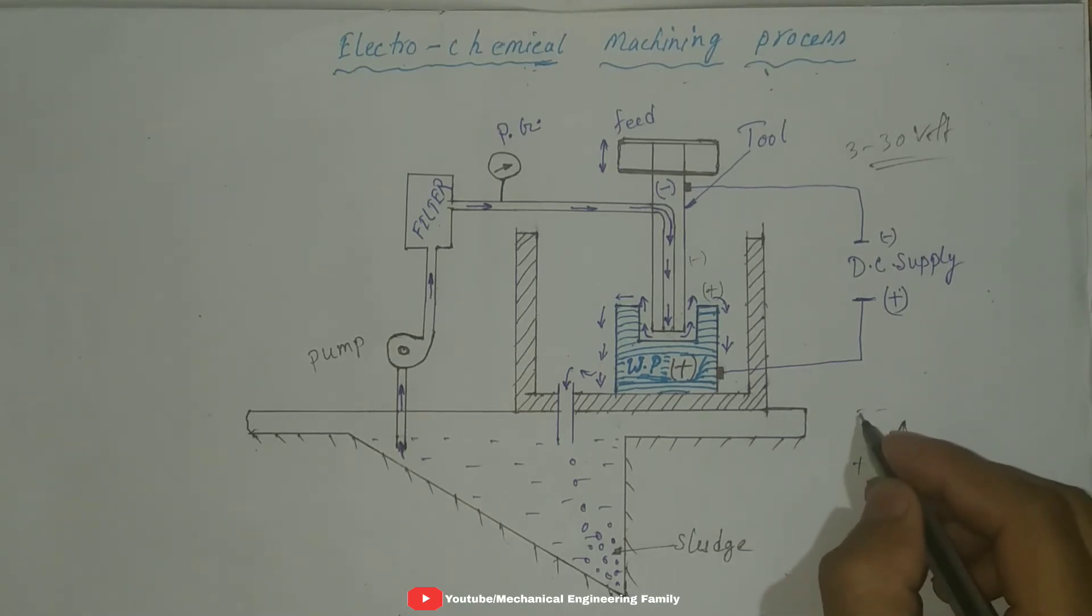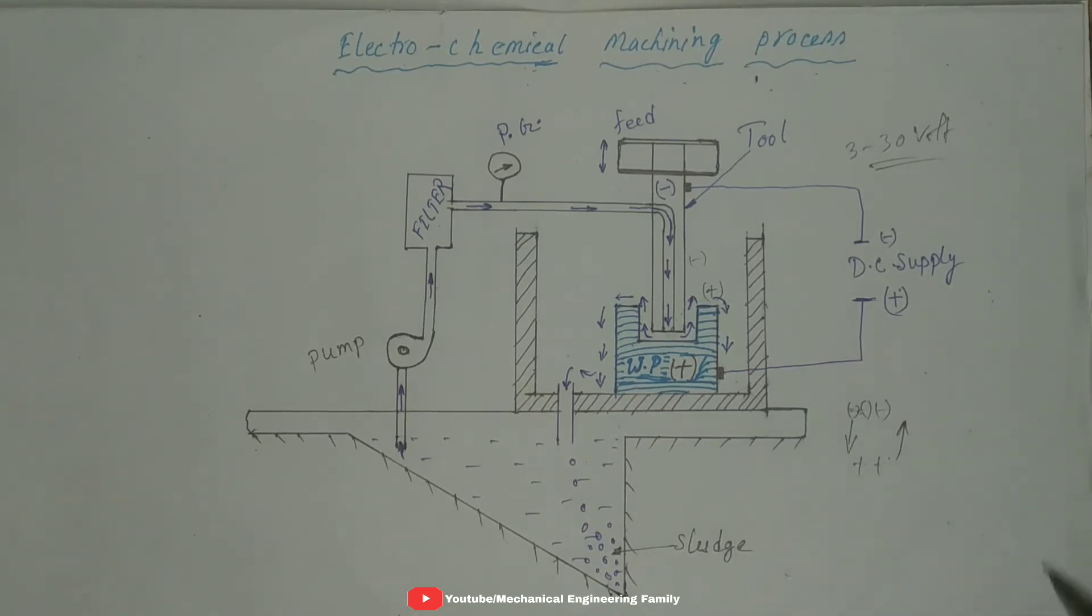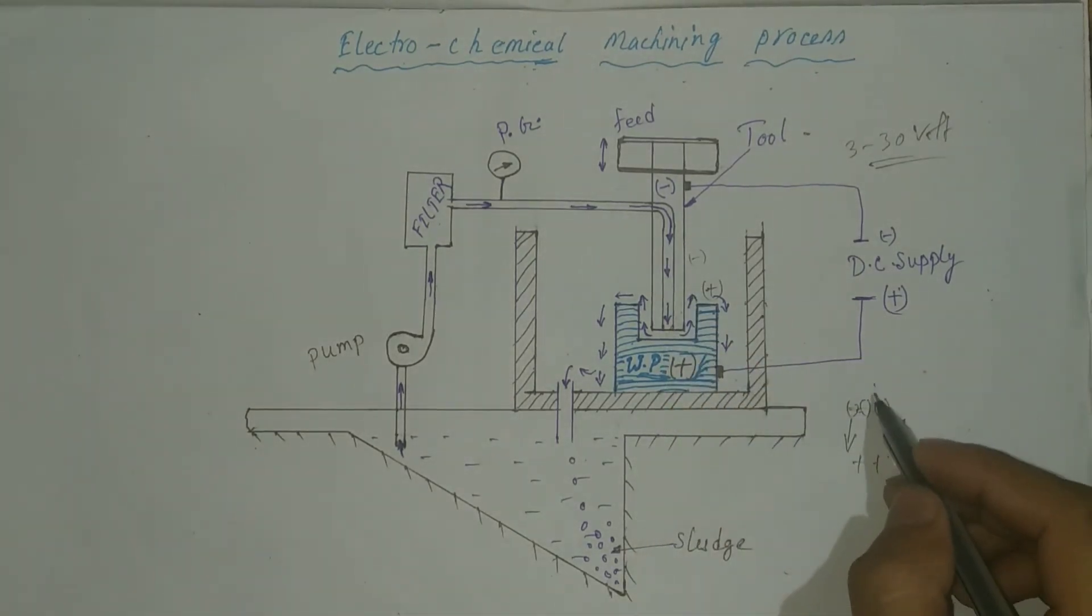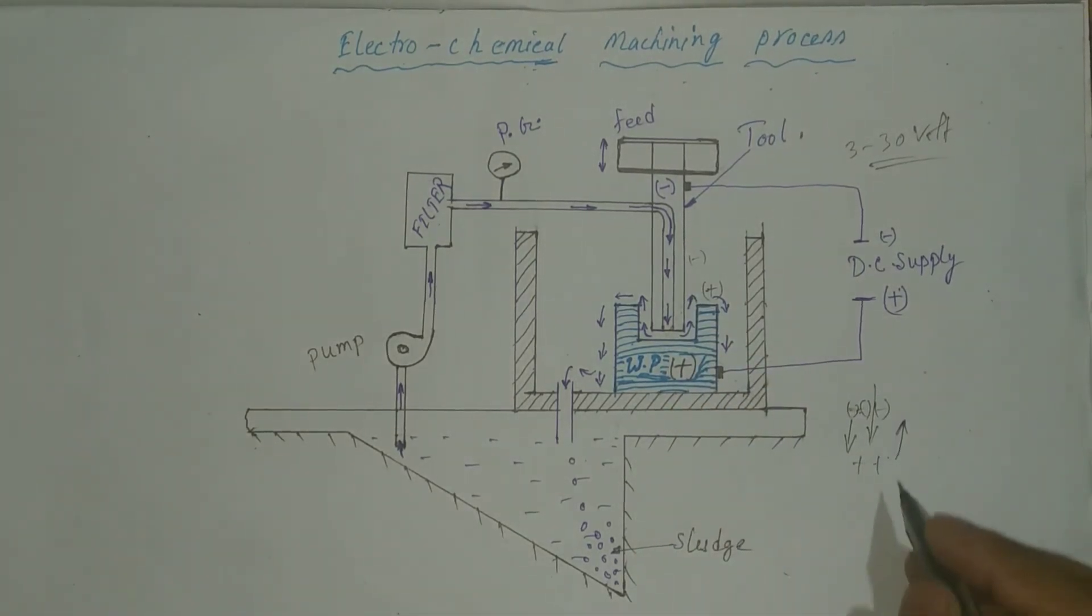The positive charged particle towards negative and the negative charged particle towards positive. As the electrolytes come from the top, the positive charged particle cannot reach to the tool. And the electrolyte flows the positive ions.